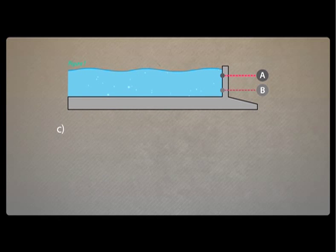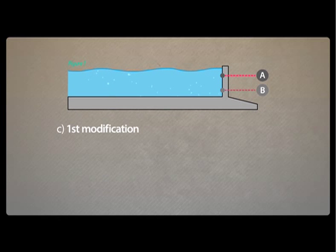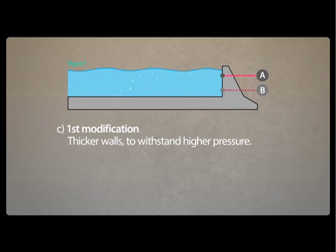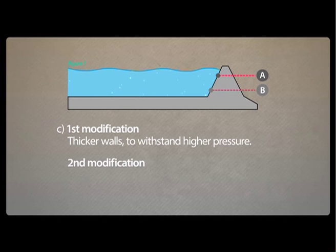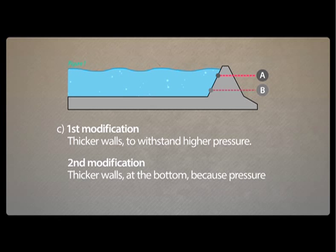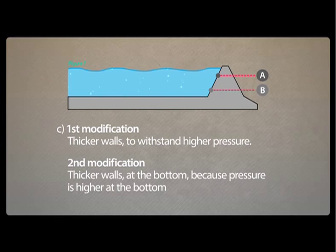For part C, the first modification is that thicker walls should be built to withstand higher pressure. For the second modification, the bottom part of the wall should be even thicker, because the pressure at the bottom is even higher.